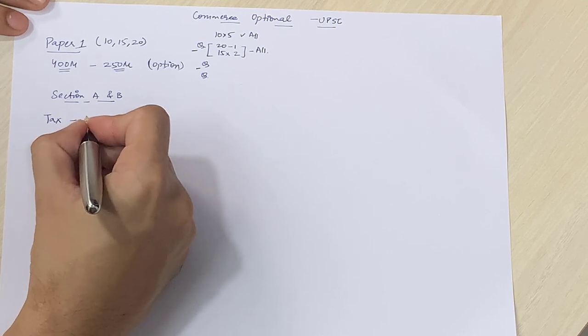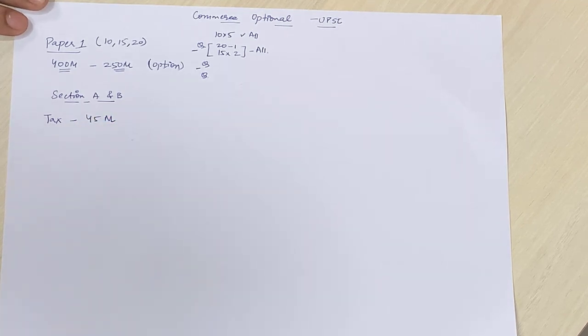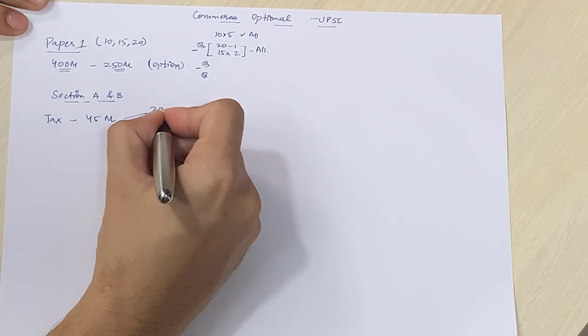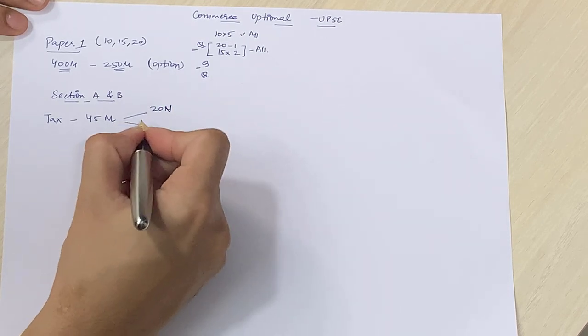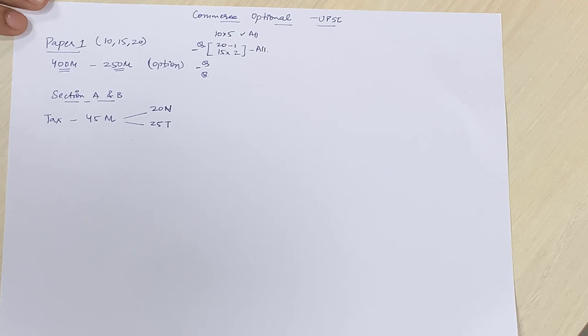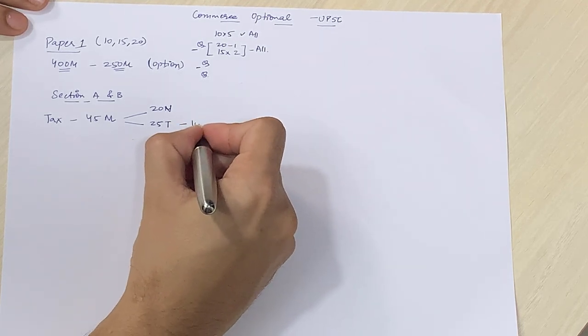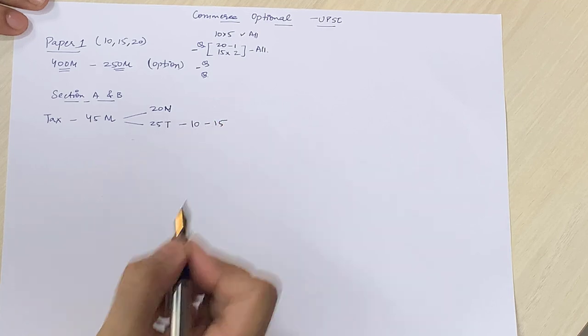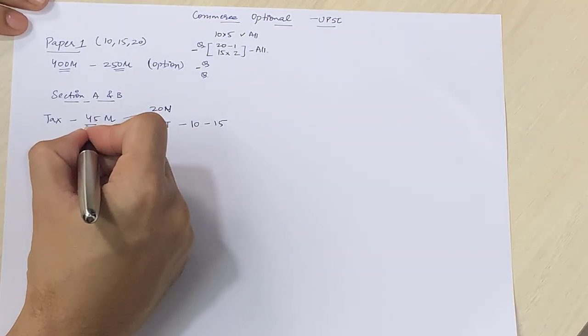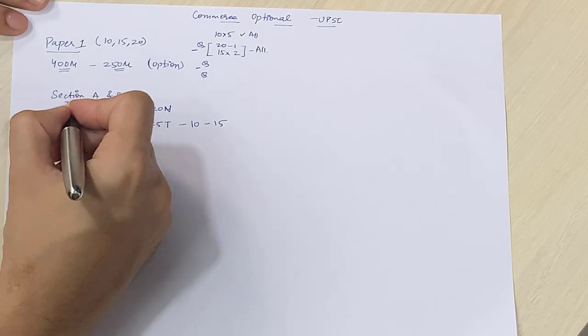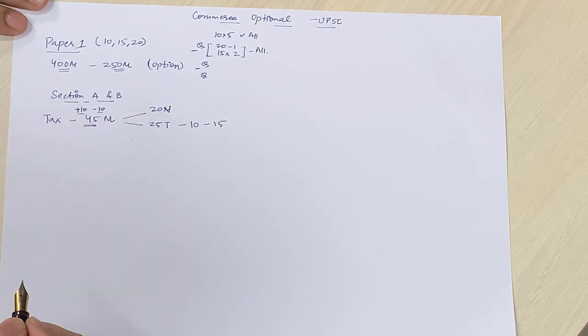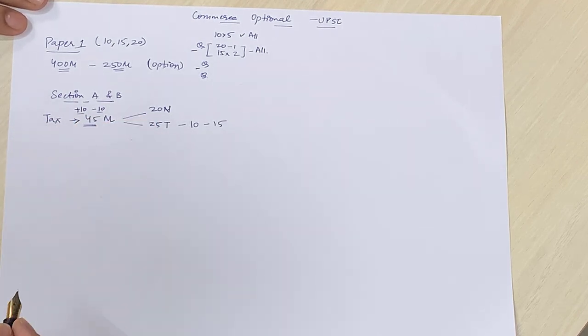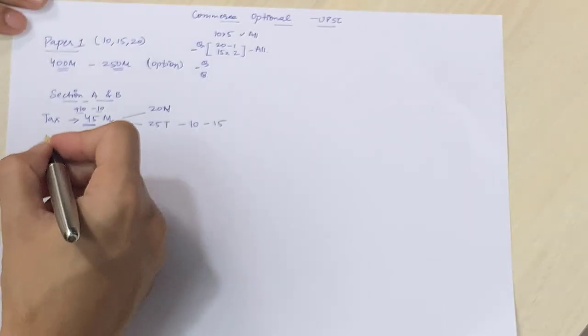Let's start with tax. Tax may total 45 marks ke questions aatay hain. Out of which, questions worth 20 marks are numerical. N stands for numerical. And 25 marks ki joh questions hain, woh theory hain. There is one question of 10 marks and one question of 15 marks. Now, this is not static. It can move up by 10 marks. It can move down by 10 marks. But we know that this is the average marks allotted to tax in section A and B in paper 1 of commerce optional.